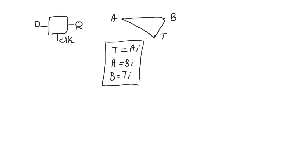But for them to execute variable swap, the order has to be observed: this must be statement one, this must be statement two, and this must be statement three. If you exchange the order of any two statements, variable swap will not be achieved.